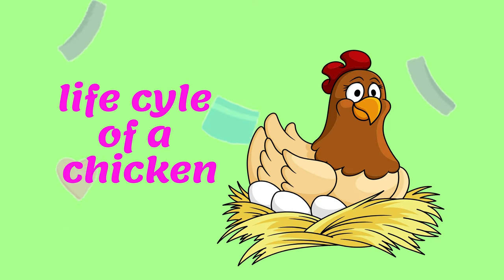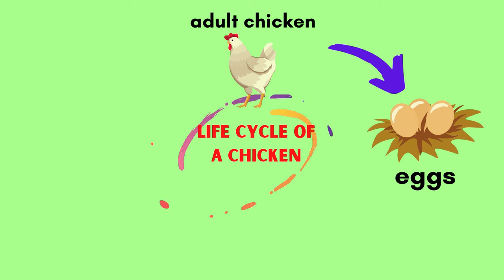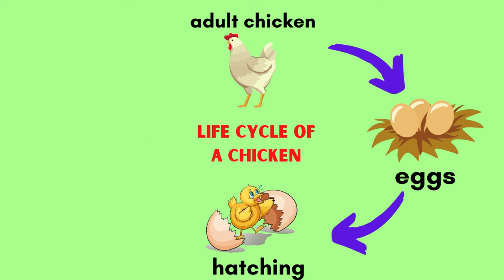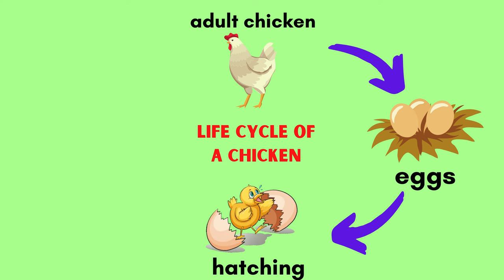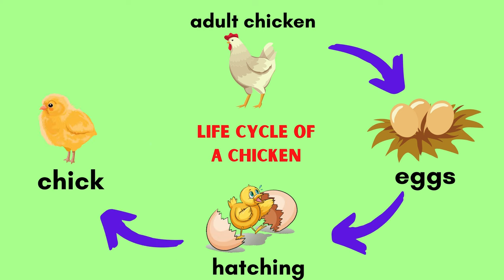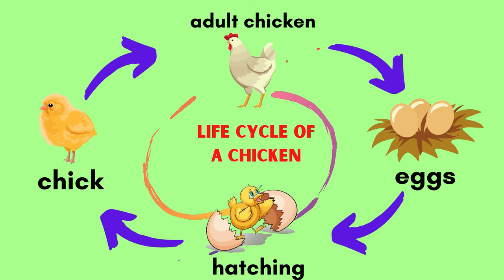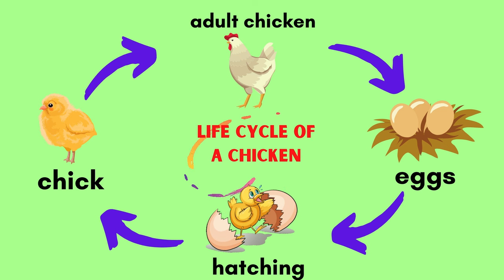Life cycle of a chicken. An adult chicken will lay eggs. The eggs hatch, chicks come out, and it grows to an adult chicken.